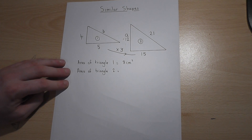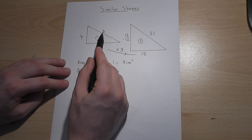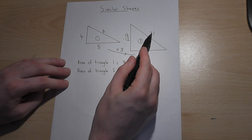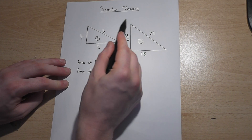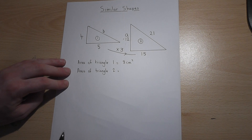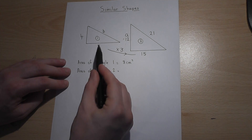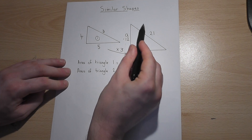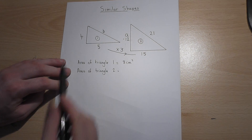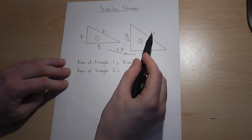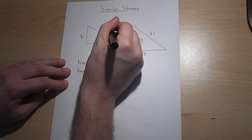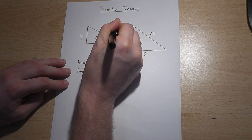Now the other missing side is 'b'. 'b' corresponds to the 21 over here, but to get back to 'b' requires us to reverse the enlargement. So rather than times by 3 as we found 'a', we must divide by 3 to get back to 'b', and 21 divided by 3 equals 7.